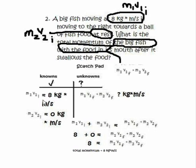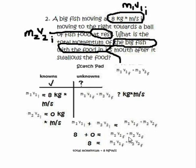My knowns are: momentum of object one is 8 kilograms meters per second, and the momentum of object two is zero because it's at rest — anything times zero is zero, so it doesn't matter what the mass of the fish food is. My unknown is the total momentum after. Substituting into the equation: 8 plus 0 equals M1 times V1 final plus M2 times V2 final. So 8 equals the total momentum of the fish moving with the food, which represents the total final momentum after the collision.